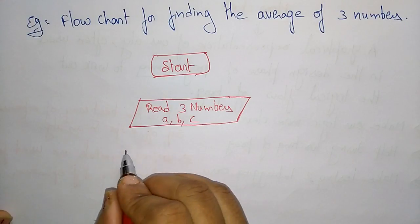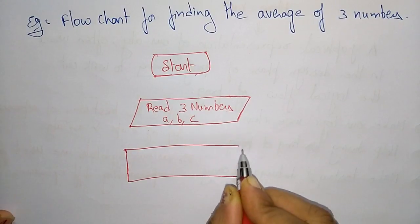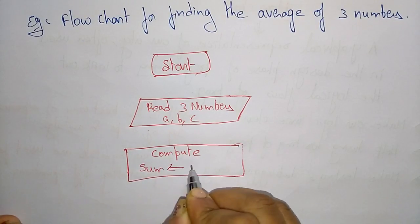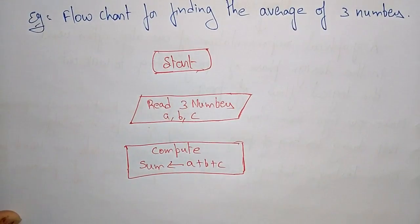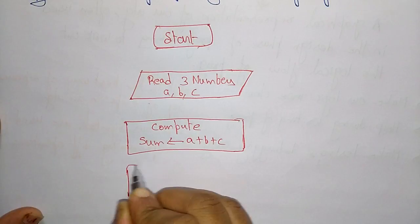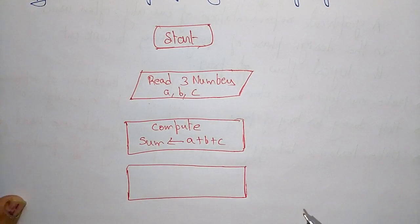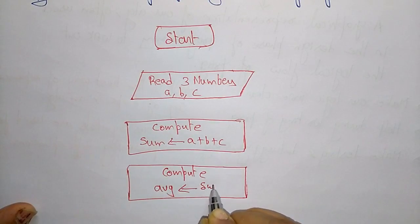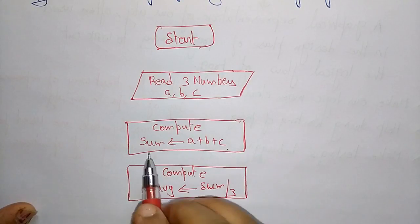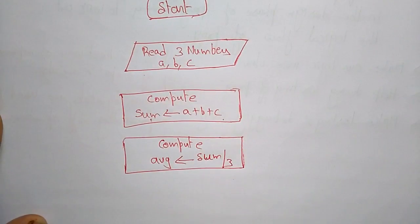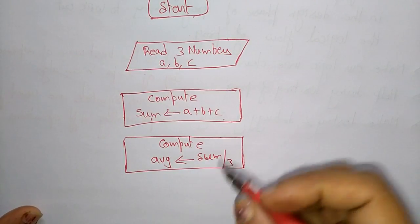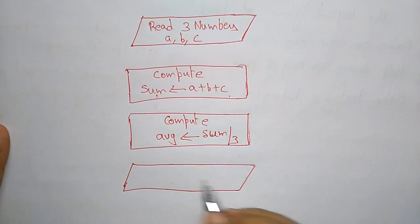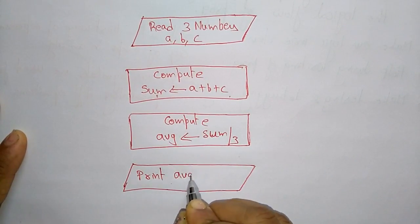After that, for computing the sum, we take a rectangle (process symbol) and write: Compute Sum = A + B + C. Then again, for the next calculation, we take another rectangle and write: Compute Average = Sum / 3. After finding the average, to print the output value, we take a parallelogram and write: Print Average Value.